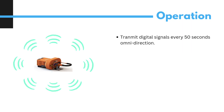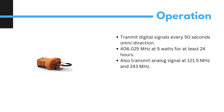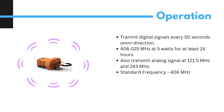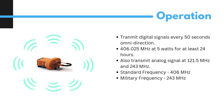The ELT transmits digital signals every 50 seconds omnidirectionally at 406.025 MHz at 5W for at least 24 hours. It also transmits an analog signal at 121.5 MHz and 243 MHz. The standard frequency of modern ELT is 406 MHz, while the first form of the ELT beacon was 121.5 MHz, whereas 243 MHz has long been the military emergency frequency.